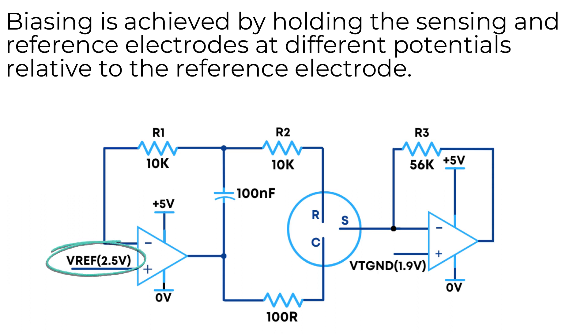And a 1.9 volt virtual ground voltage to the sensing electrode. Thus the sensing electrode is held at 600 millivolts below the reference electrode. The current produced by the sensor can be measured across the 100 ohm resistor as shown here.